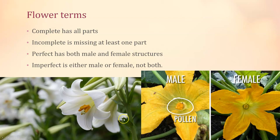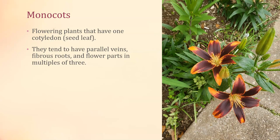Within phylum Magnoliophyta there are two broad groups. These used to be subphyla or superclasses — the taxonomy is in flux. Monocots are flowering plants with one seed leaf, called a cotyledon, so monocot means one cotyledon. Monocot flowers tend to have flower parts in multiples of three — this lily has six petals, which is a multiple of three.